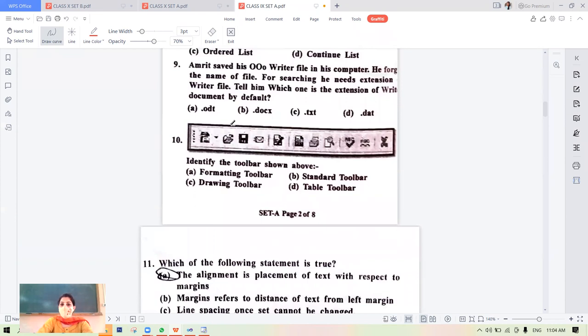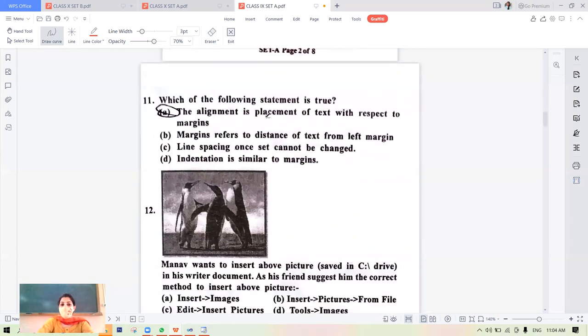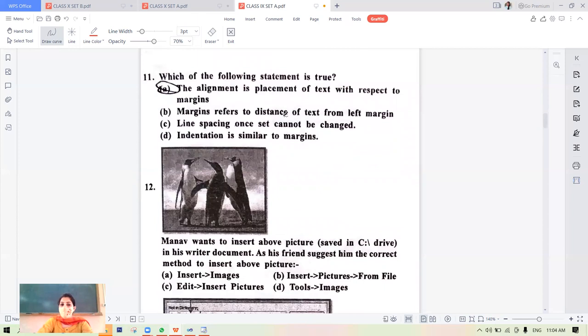Amrit saved his OpenOffice Writer file in his computer. He forgot the name. For searching, he needs the extension of writer. What is the extension of writer? .odt. Identify the toolbar. You can see the buttons related to open, save. These buttons are on the standard toolbar. Which of the following statement is true? The alignment is placement of the text with respect to the margins. Margin refers to the distance of text from all the sides. So the correct answer is A part.